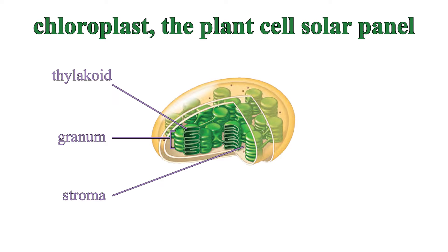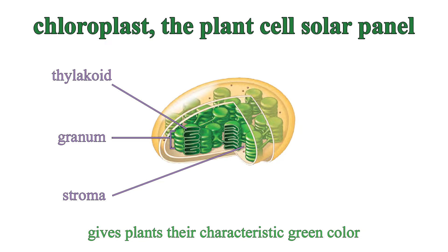Chloroplasts are found exclusively in plant cells, and their green pigment, chlorophyll, gives plants their characteristic green color. Respiration and photosynthesis are both super complicated, and they will be addressed again in a future video.